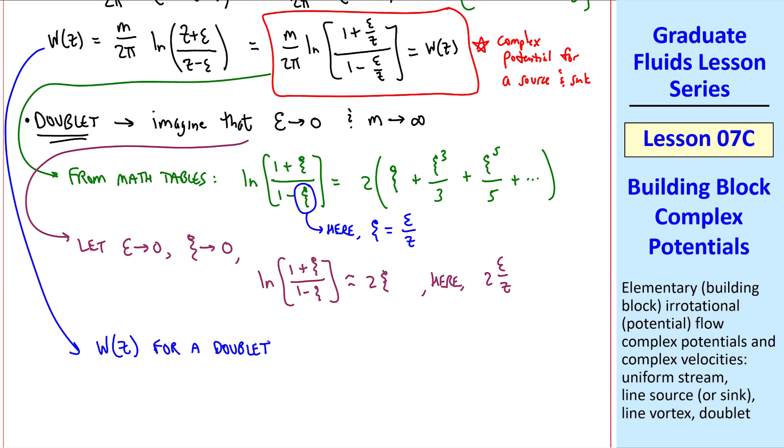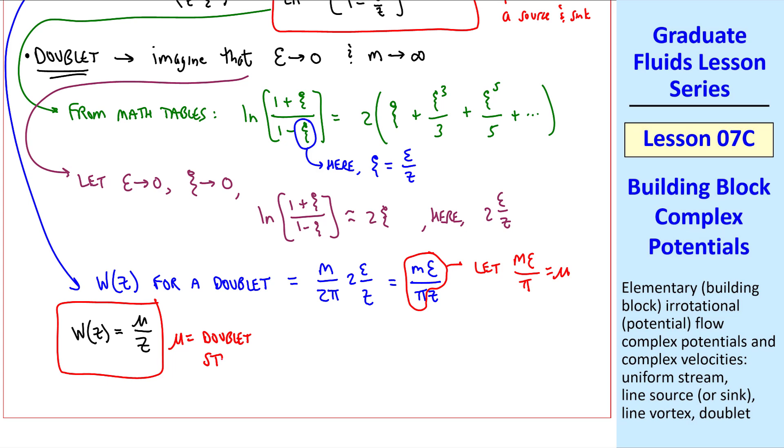So finally, w of z, which is the complex potential here for a doublet, is equal to m over 2 pi. And this whole logarithmic term reduces to 2 epsilon over z. Or since the 2's cancel out, m epsilon over pi z. What most people do is let m epsilon over pi equal mu. So for a doublet, the complex potential is mu over z, where mu is the doublet's strength. Recall that I said epsilon goes to 0 and m goes to infinity. But we do this in such a way that m times epsilon is a constant. As epsilon decreases, m increases proportionally so that the product remains constant. Therefore, mu is a constant, which we call the doublet's strength. This is the complex potential for a doublet along the x-axis. You can imagine rotating this to any other orientation, such as along the y-axis or anywhere else. And the equations would have to change appropriately. We'll treat this doublet as another building block flow, even though it itself was created by superposition of a source and a sink.